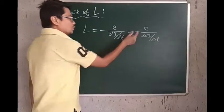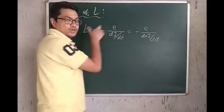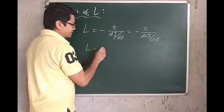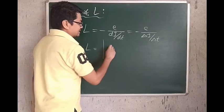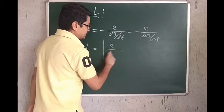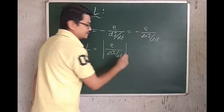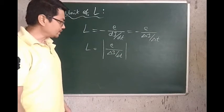Now, since we are only concerned with the magnitude of L here, so we will write L is modulus, inside modulus, delta i by delta t. We can also write this minus too. Ok.